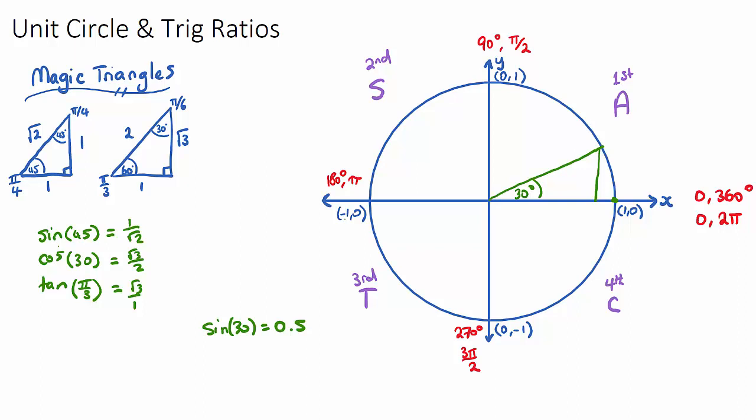Now if we did cos of 30, we can go to our magic triangle and do cos, which is root 3 on 2. Root 3 on 2 as a decimal is somewhere between 0.8 and 0.9, I think it's about 0.85 ish. That kind of makes sense now because this angle is quite shallow.